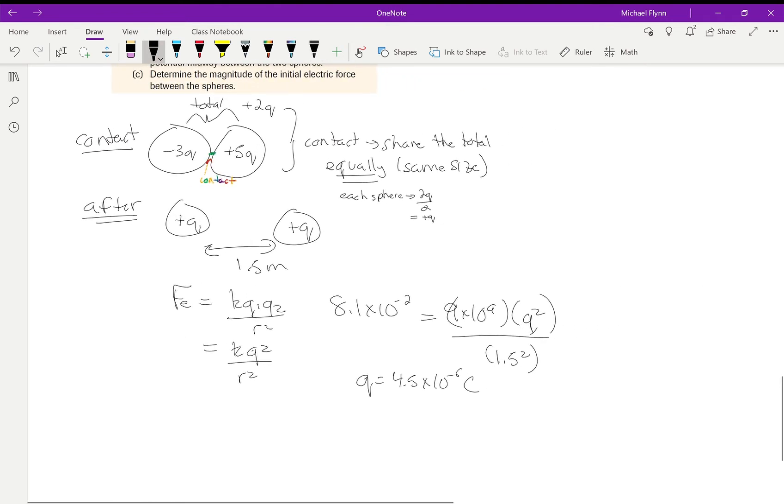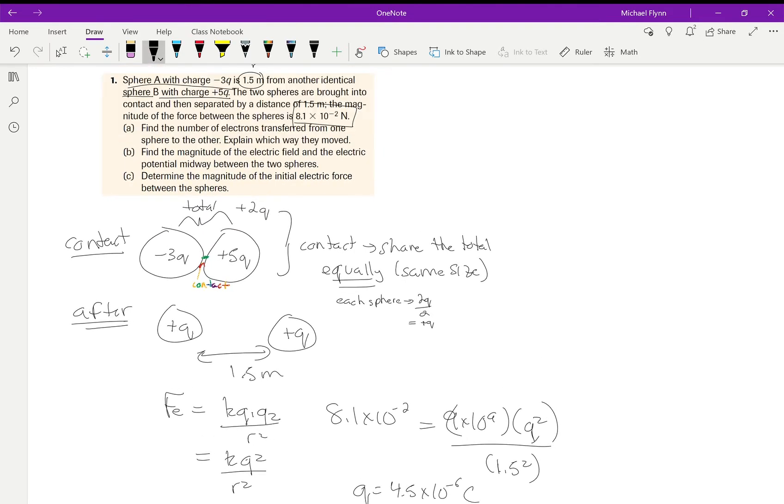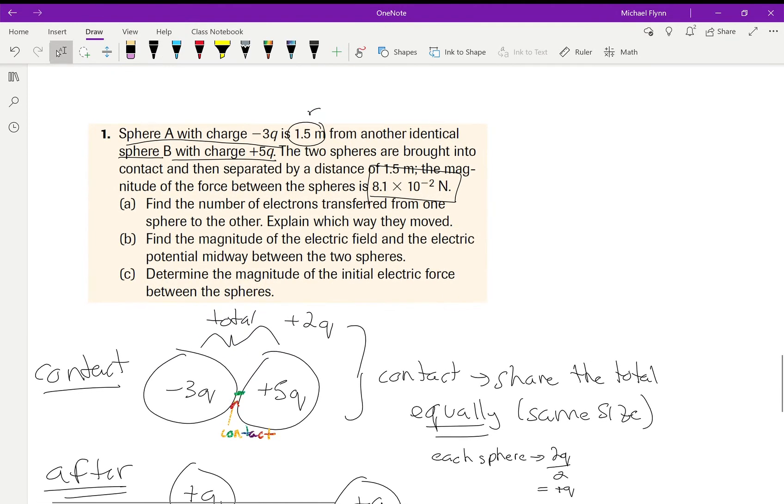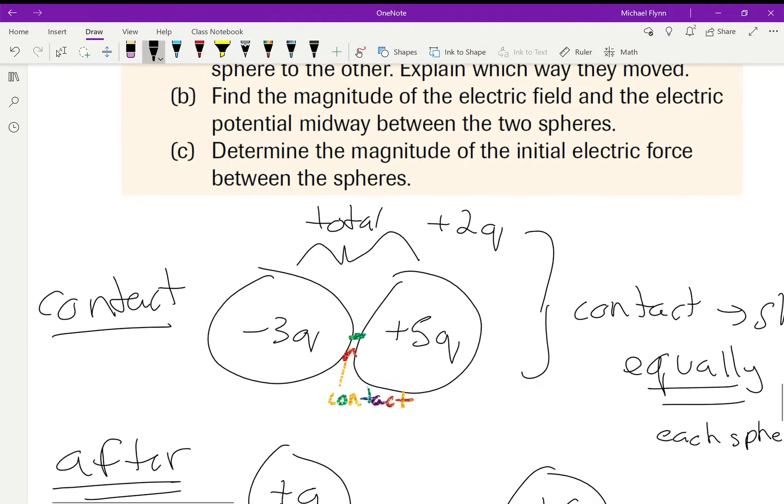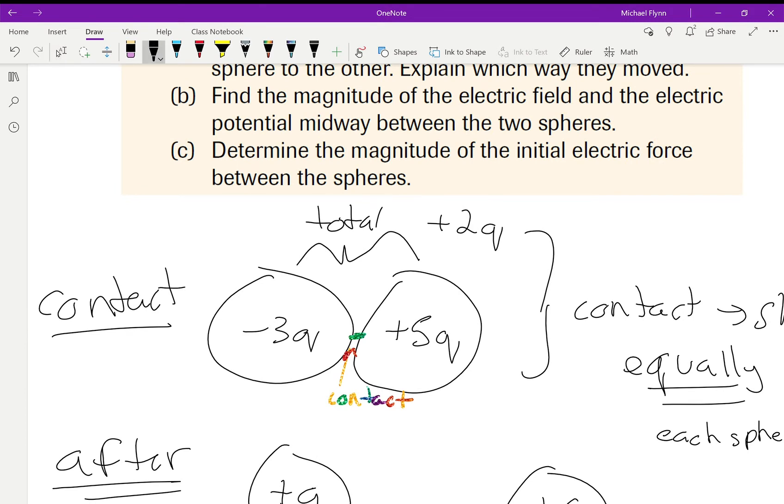Now that is actually not the answer to the number of electrons transferred from one sphere to the other. Explain which way they moved. So here's the deal, this is sphere A, this is sphere B.